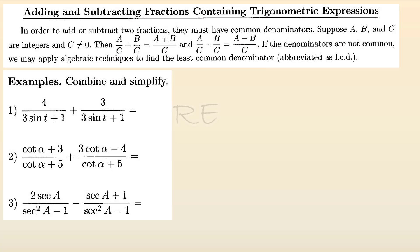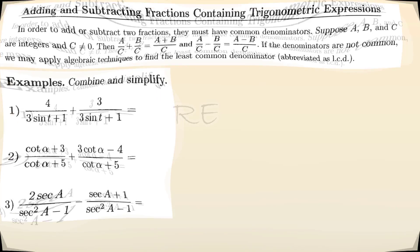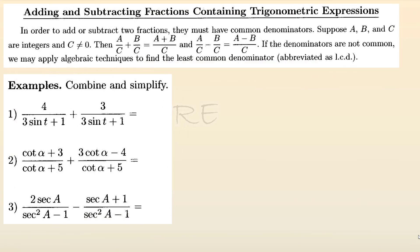A over C plus B over C is equal to A plus B over C, and A over C minus B over C is equal to A minus B over C.